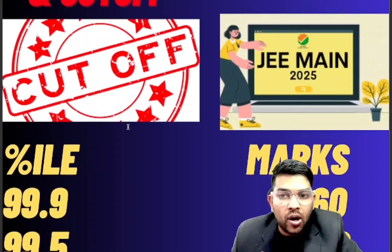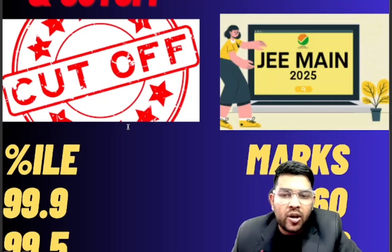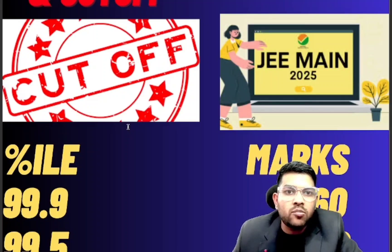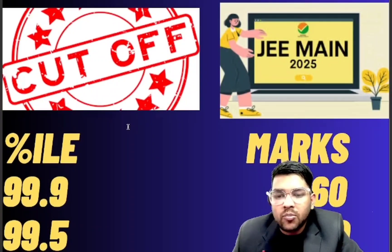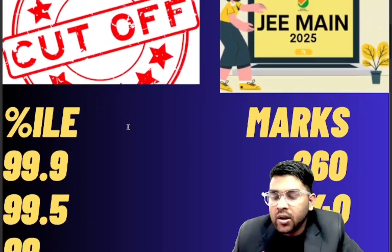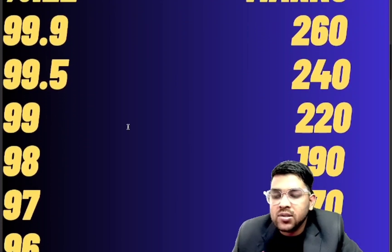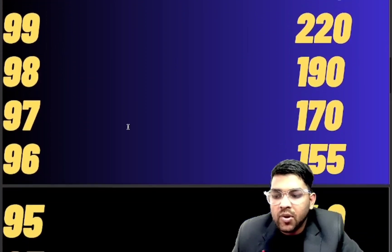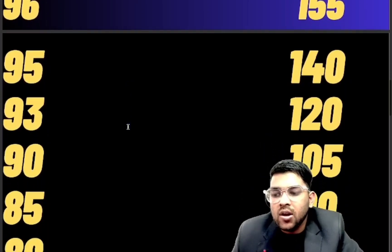For 99.9 percentile, talking about this shift particularly, 260 marks out of 300 is required. For 99.5 percentile, 240 marks is required. For 99 percentile, 220 marks. For 98 percentile, 190 marks. For 97 percentile, 170 marks. For 96 percentile, 155 marks. For 95 percentile, 140 marks. For 93 percentile, 120 marks. For 90 percentile, 105 marks. For 85 percentile, 90 marks.